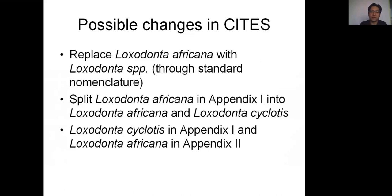The possible changes in CITES could come in three major ways. The first is to replace 'African elephant' with its subspecies through standard nomenclature — this is straightforward since all four existing Appendix 2 African elephant populations are savannah elephants. The second way is to split list African elephants in Appendix 1 into savannah elephant and forest elephant while keeping Appendix 2 as it is. The third way is for African forest elephant to be listed in Appendix 1 while savannah elephant would be listed in Appendix 2.